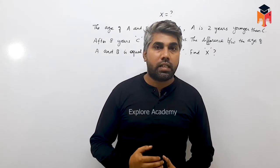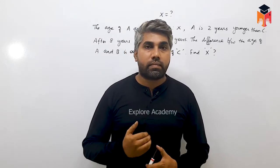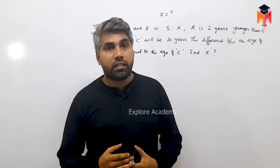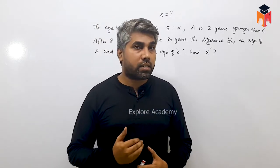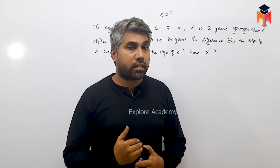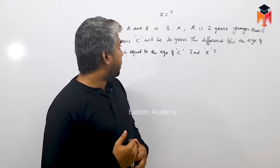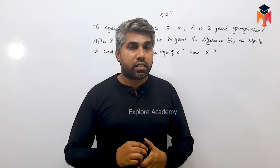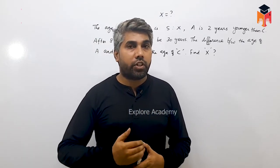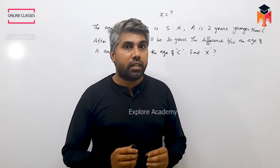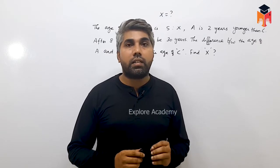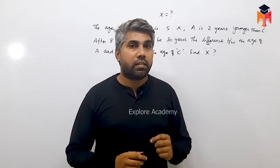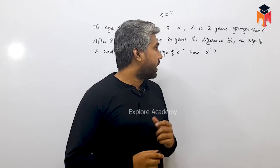Next problem. The age of A and B is in ratio 5 to x. A is 2 years younger than C. After 8 years, C will be 30 years. The age difference of A and B is equal to the present age of C. Find the value of x.